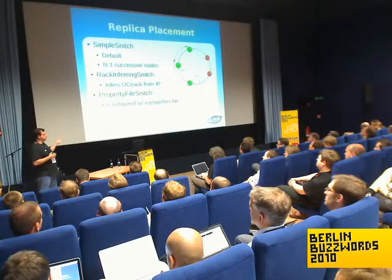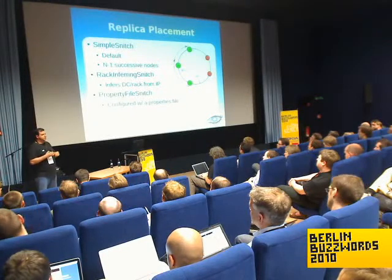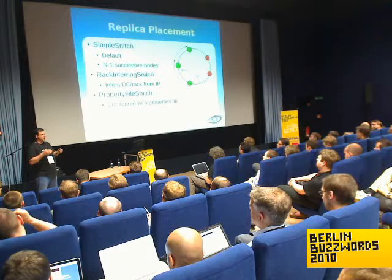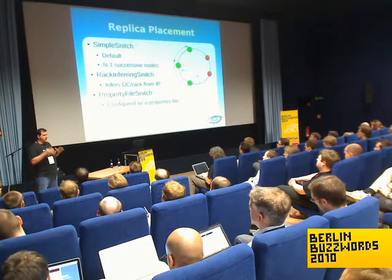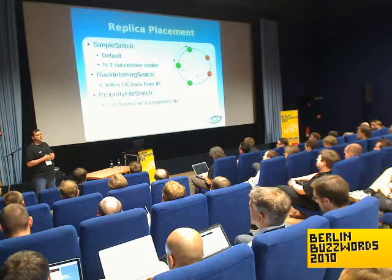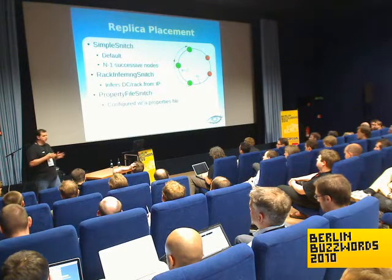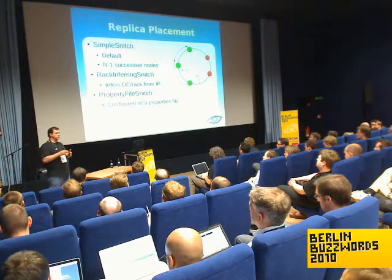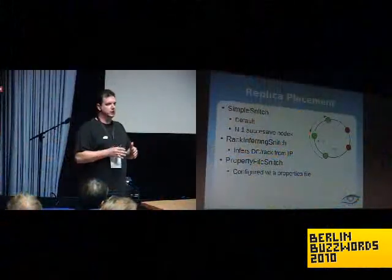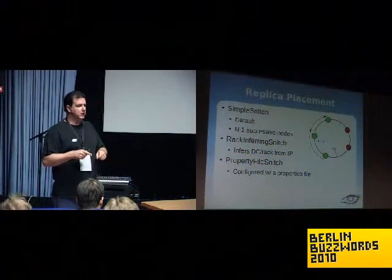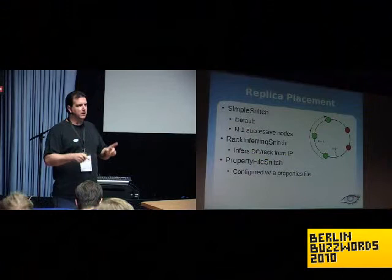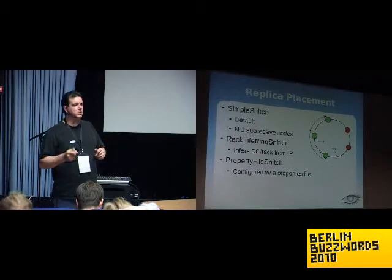There's also DC-aware quorum support going in — it's partially in 0.6 but will be complete in the next version. That will allow you to specify a consistency level that accounts for data center location and locality. For example, you could say: I have four replicas and I want to block on three, and I want them to be the three in this data center across these two racks.